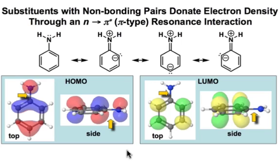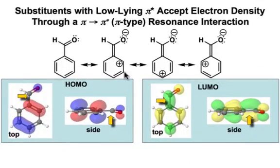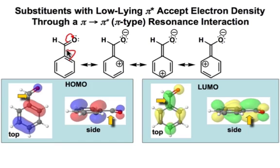Electron donating substituents have their greatest influence on the HOMO and very little interaction with the LUMO — but that's the opposite of what we see with electron withdrawing substituents. In the case of electron withdrawing substituents, there will be a resonance-type interaction if there's a low-lying π* orbital on that substituent, such as with this polarized π bond. The curved arrows show electron withdrawing from the benzene ring π system into the π* of the carbonyl group, creating a positive charge on the benzene ring in the three positions shown.